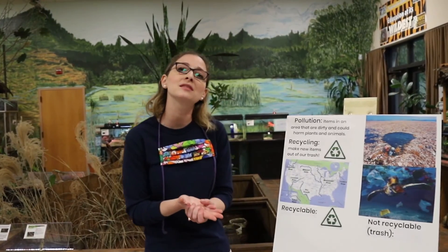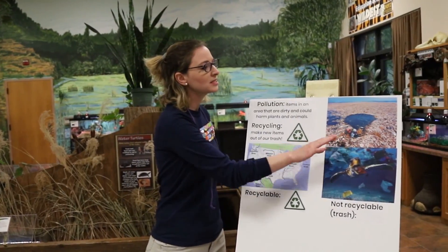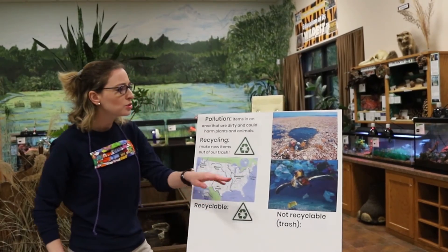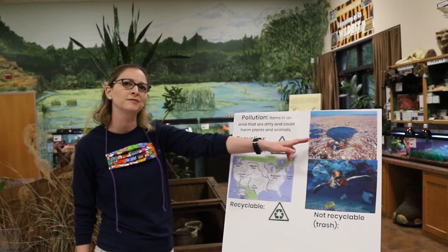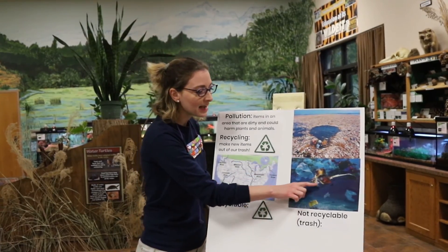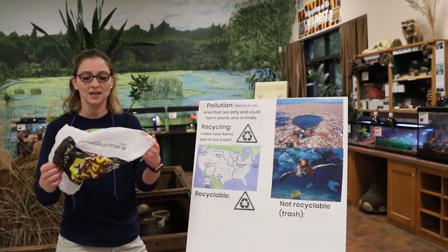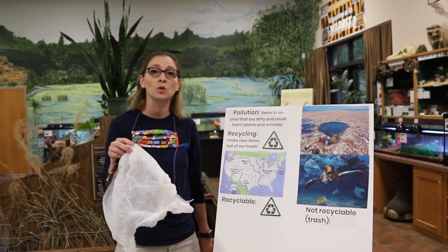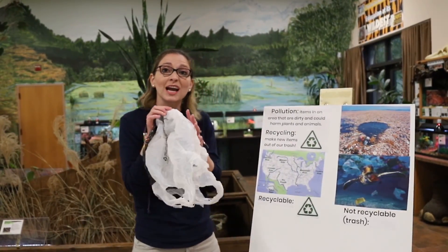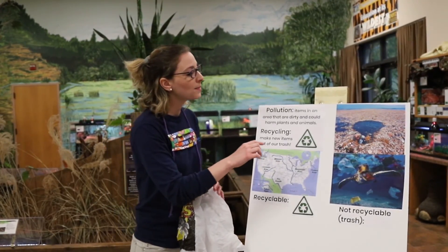Before we talk about what is recyclable, let's talk about what happens to plants and animals when trash becomes pollution. Here is a picture of a spot in the ocean that has lots and lots of pollution — lots of trash floating around. Do you think this is a safe place for animals and plants to live? If you said no, you are right. Many animals like sea turtles actually get stuck in our trash when it makes it to the ocean. To us this is a plastic bag, but when it floats in the water, to a sea turtle it looks like a jellyfish. They try to eat it, and a sea turtle that eats a plastic bag could get really sick or even pass away.